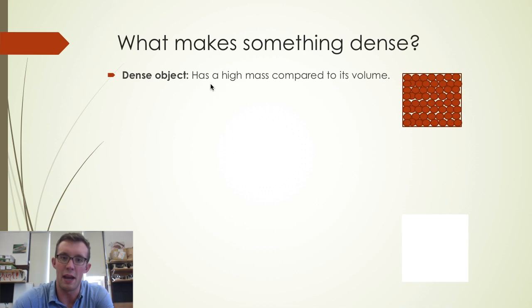Dense objects have a high amount of mass compared to their volume, and so we've got a particle diagram of a dense object here. In other words, there's a lot of particles, a lot of mass, crammed inside the volume inside of the object space.